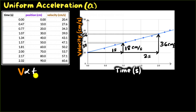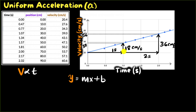How do we build an equation connecting velocity and time? We know the equation of a straight line: y = mx + b, where b is the y-intercept and m is the slope. The slope represents rise over run. We get 18 divided by 1, or 36 divided by 2, which is 18. So m is 18, and b is the y-intercept, which is about 20. So we get y = 18x + 20.